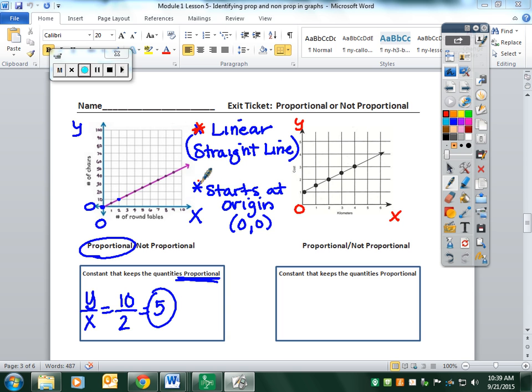Does it start at the origin? Does it go through the point (0,0)? In this one, it does not. As soon as I see that it doesn't start at the origin, I know this is a non-proportional relationship. Since this is non-proportional, there will be no constant that keeps it proportional.